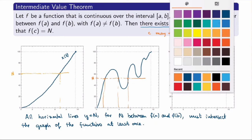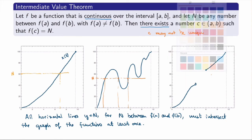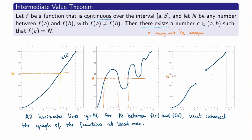The second important thing is the continuity requirement. If a function is not continuous, you cannot conclude that it satisfies the statement of the Intermediate Value Theorem. For example, if I take a function that has a jump and pick an N somewhere in that jump, then there is no point c between a and b such that f of c equals N — the horizontal line y equals N does not intersect the graph. So we cannot apply the Intermediate Value Theorem if the function is not continuous.